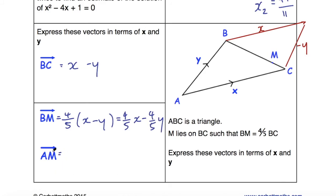And then we need AM—so A is here and M is here—in terms of x and y. Well, I need to go from A to B first—that's y—and then B to M, and we have BM here as a vector, so I can say that AM will be y + (4/5)x - (4/5)y.